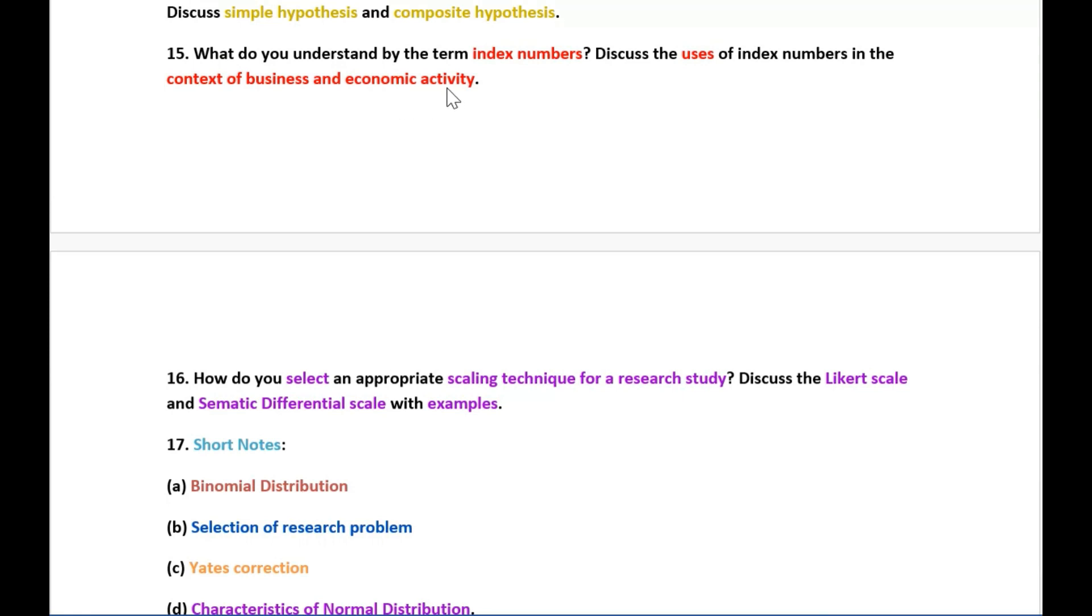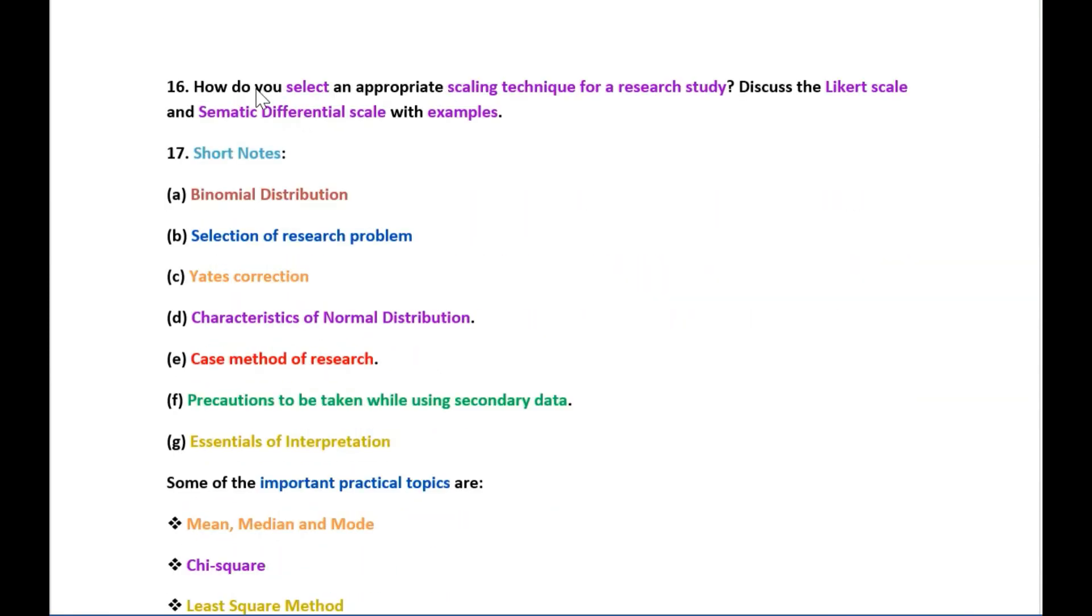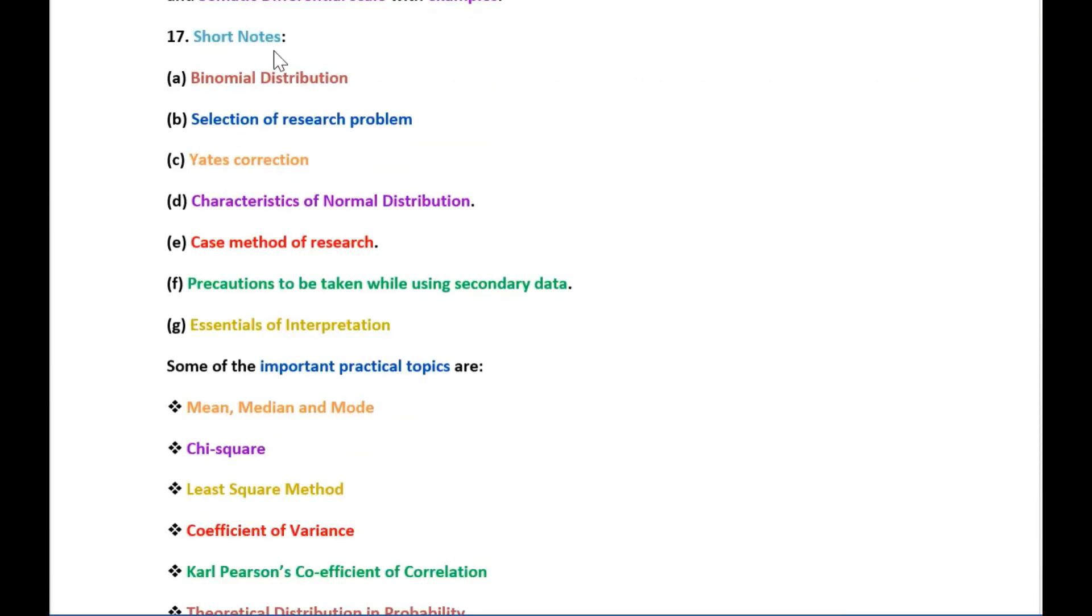The next question is on how do you select an appropriate scaling technique for a research study and discuss the Likert scale and semantic differential scale with examples. Next question is on short notes on binomial distribution and selection of research problem, Yates correction, characteristics of normal distribution, case method of research, precautions to be taken while using secondary data, and essentials of interpretation.